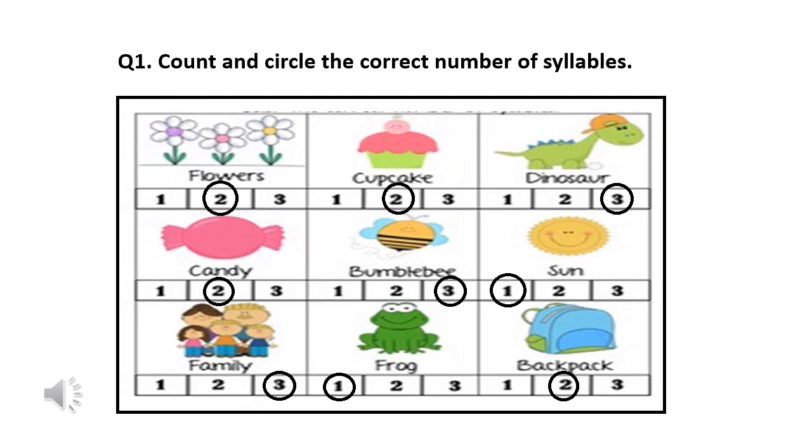Family, three. Frog, one. And the last one is backpack. It has two syllables.